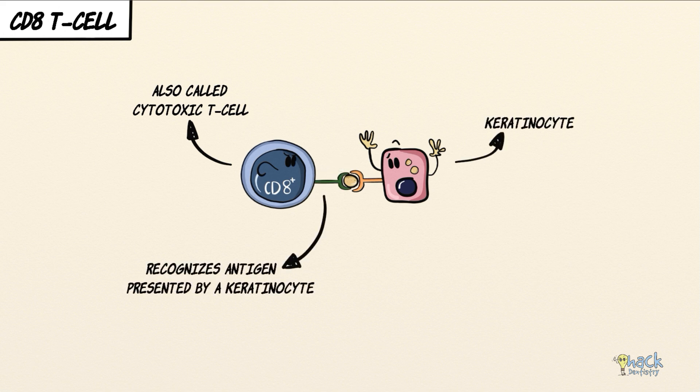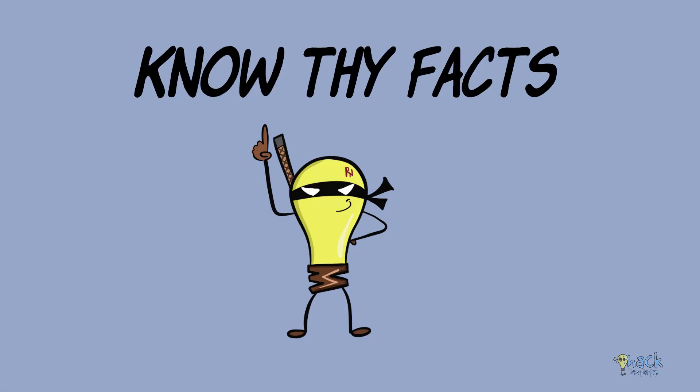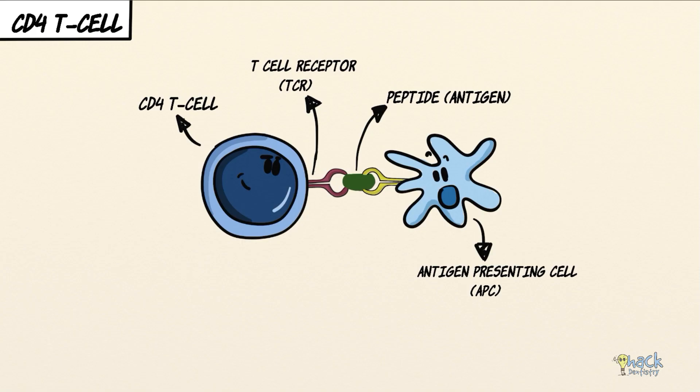A CD8 T cell is also called a cytotoxic T cell because it recognizes an antigen displayed by an infected cell — for example, a viral antigen presented by a keratinocyte — and destroys the infected cell via granules called perforins and granzymes.